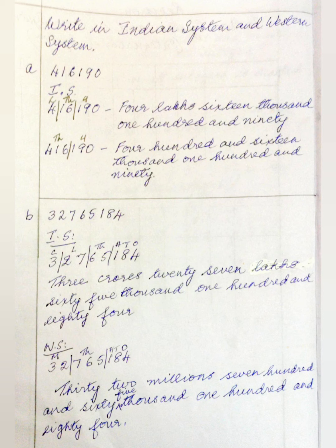Now the same number we are going to write in the Western system. We mark it as: ones, tens, hundreds | thousands, ten thousands, hundred thousands, millions, ten millions. So accordingly you will get 32,765,184.